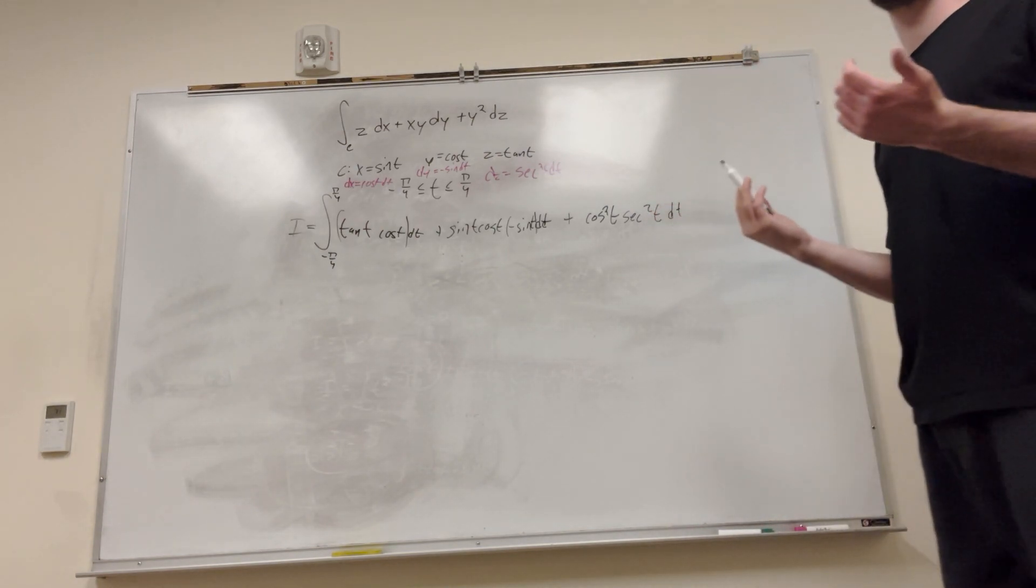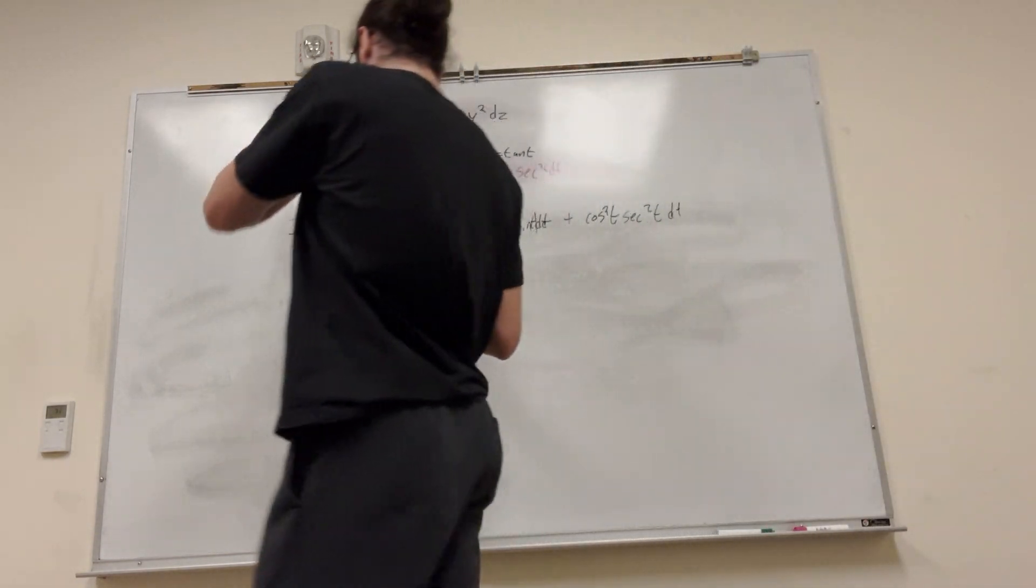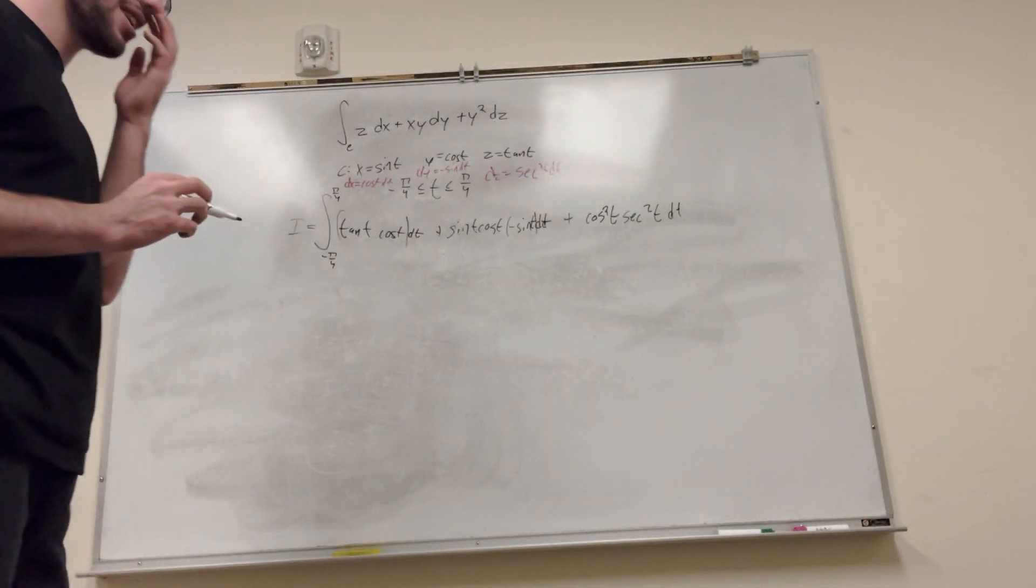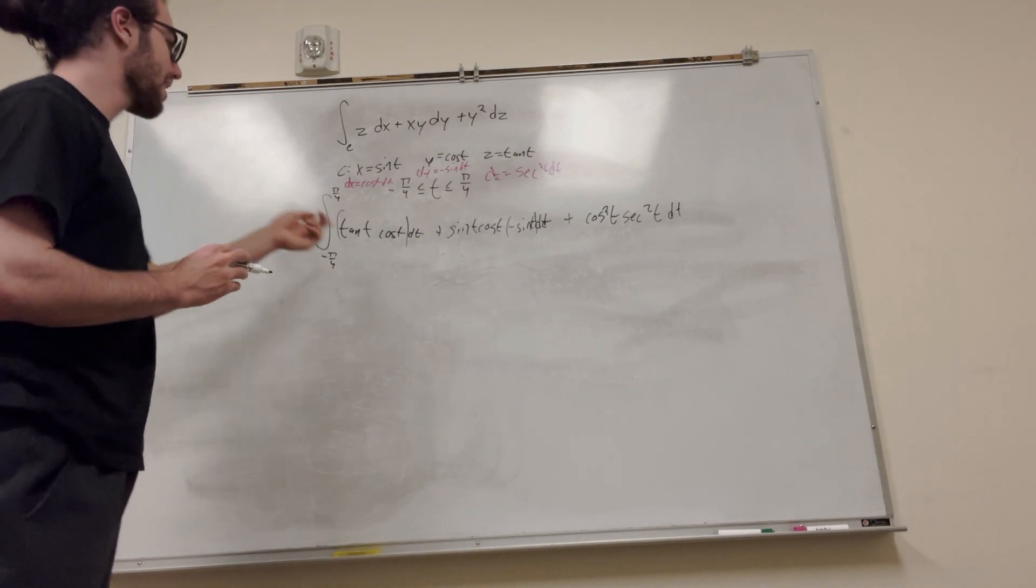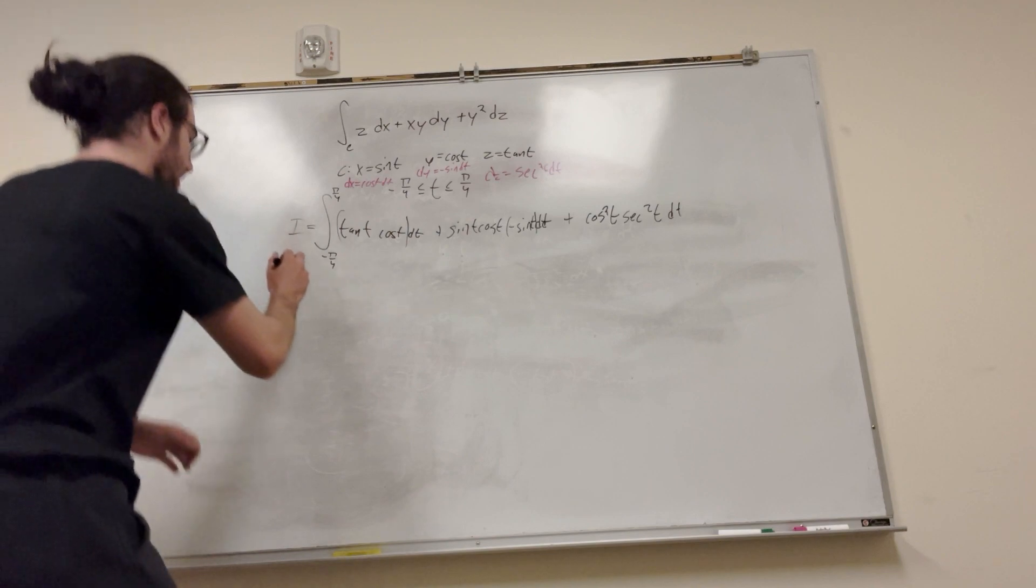And you're looking at this, and you're probably like, oh, thank God, it cancels. It gives you one. All right. So we're going to break this up into three integrals, because there's a lot of better ways to do this. So we know that tangent is sine over cosine. So the cosines are going to cancel out, and it's just going to give us sine, right?